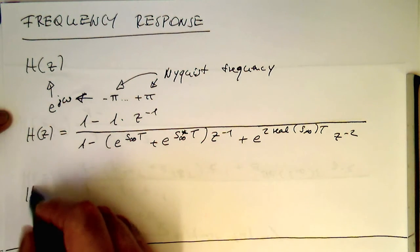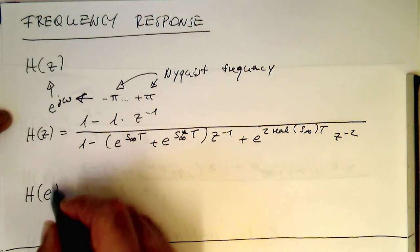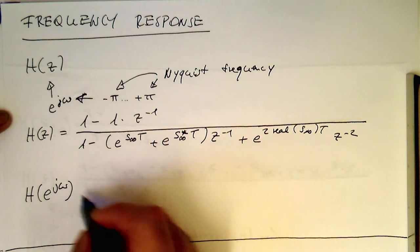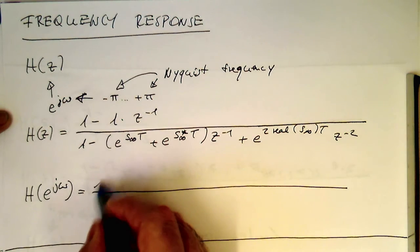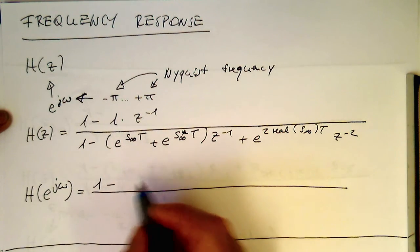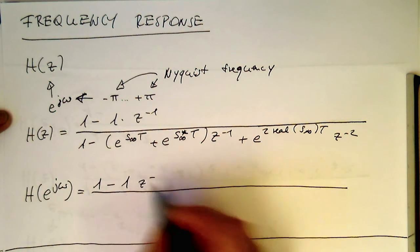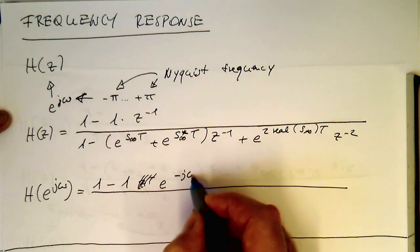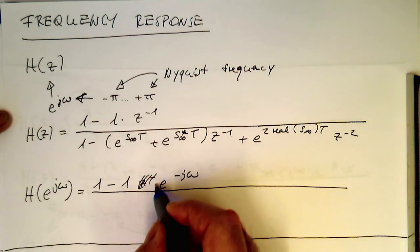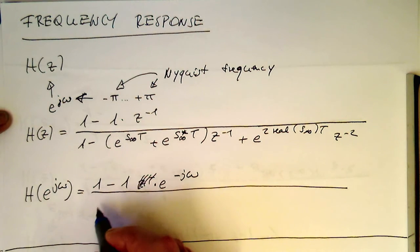And so now, our H of e to j omega is then just substituting this here into our function. So, 1 minus Z to and not Z, but e to minus j omega. Yes, so we are substituting this in here.